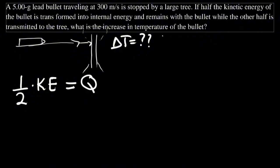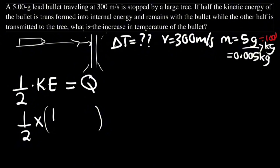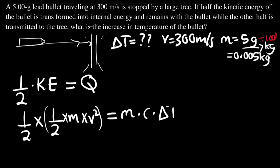The velocity is 300 m/s and the mass is 5 grams = 0.005 kilograms. The equation is: (1/2) × KE = internal energy, so (1/2) × (1/2)mv² = mcΔT, which simplifies to (1/4)mv² = mcΔT.